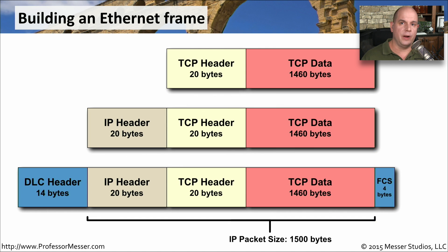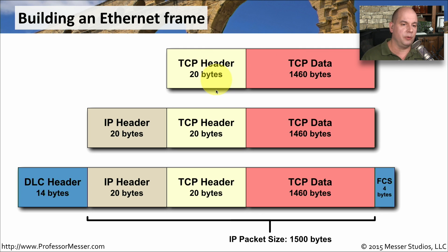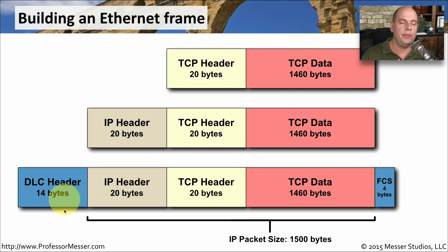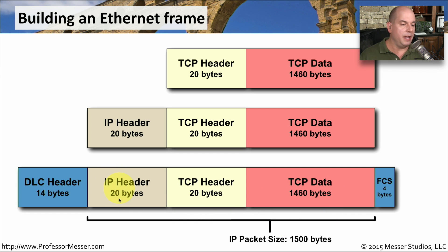Let's look at the way that an ethernet frame is constructed, and that will give us a better idea of why the MTU is so important. Let's first start with the data. Your application will need to send data from one device to another — here's the TCP data — and it puts a TCP header on the front so the system knows where to send that piece of information. Then it's sent to the IP layer, which puts an IP header on the front. Then it's sent down to the ethernet card, which puts a DLC header, or an ethernet header, on the front and a frame check sequence on the back. The part of the frame we often refer to is the IP packet section — it's this 1,500 bytes that includes the IP header, the TCP header, and the TCP data.